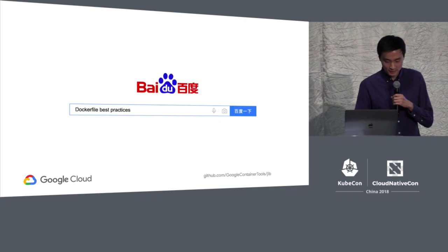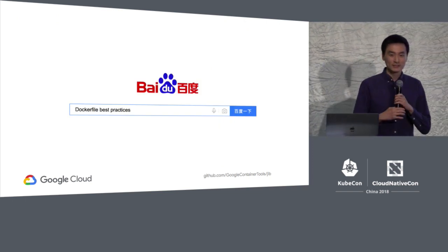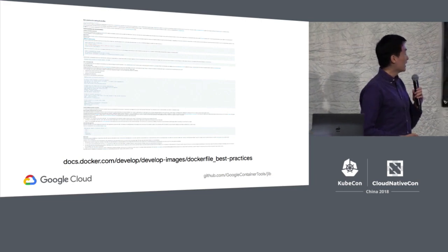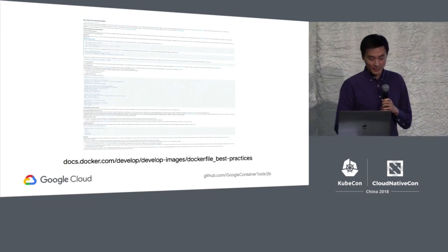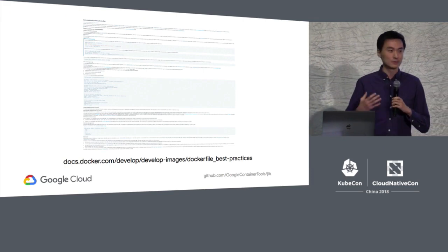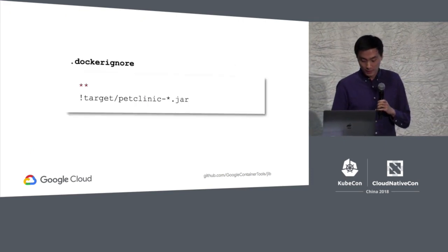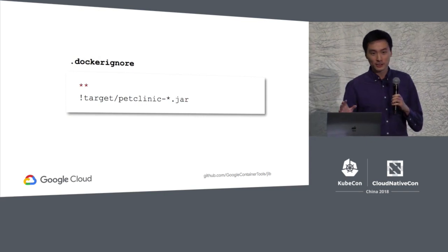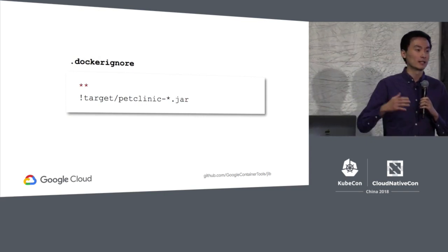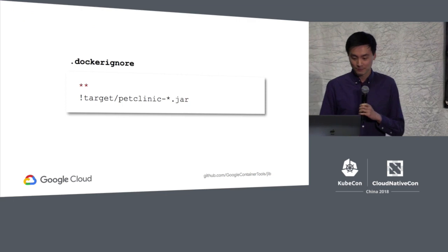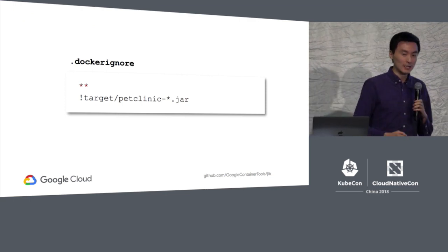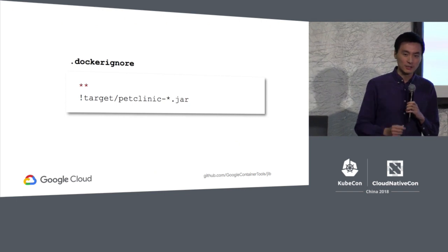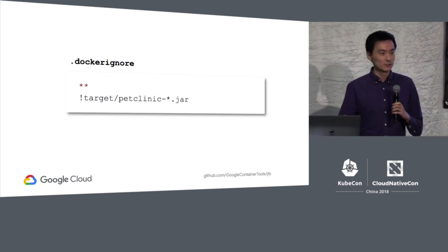I search Dockerfile best practices and find the official documentation. In there I see something about a Docker ignore file. Using tutorials, I'm able to write a .dockerignore file that ignores everything in my project directory except for the fat jar I want to copy into my container. Now my build runs a lot faster. But if I just change a single line of code, it still takes a while to do the push.